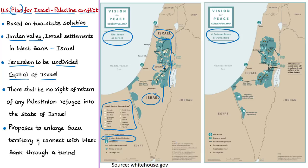The plan recognizes Jerusalem as the undivided capital of Israel, while the capital of Palestine could come up in the eastern section of Jerusalem. Though the plan mentions Palestinians would gain around two times the areas presently resided by Palestinians, experts say Palestinians would lose roughly 30% of the West Bank, lose their claim to Jerusalem, and also lose the right of return of refugees to their claimed areas now present in Israel. Most importantly, the future state of Palestine would be practically encircled by Israel.